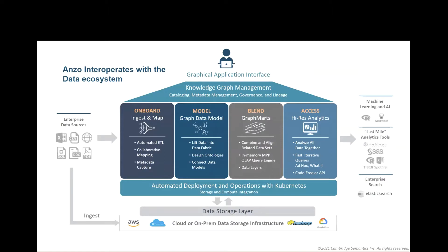There are two key points to this architecture in the underlying layers at the bottom. The first is that Anzo is cloud agnostic and we deploy on all the public clouds as well as on-prem infrastructures. The second is that Anzo leverages Kubernetes for scalability — that's scalability on ingest of structured and unstructured sources, as well as compute in terms of being able to harmonize and do in-memory transformation on the incoming data sources.